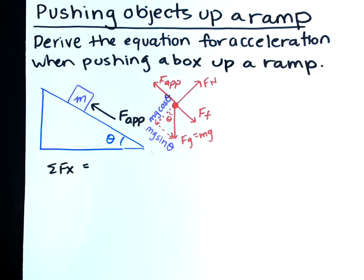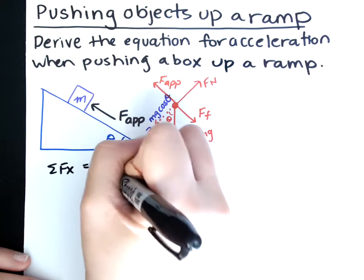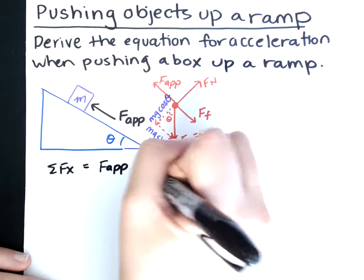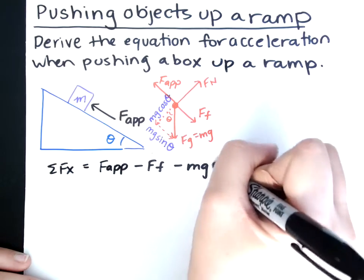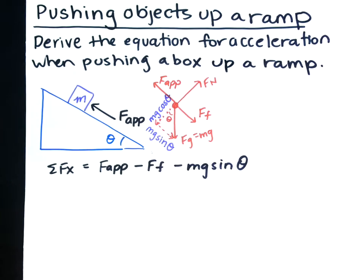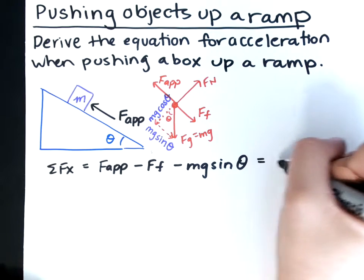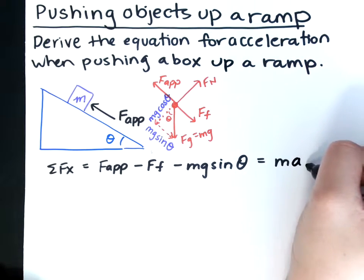Okay, we're going to call the direction it's moving positive. So f applied is positive. F of friction is negative. And mg sine theta is also negative. And this equals ma. And our acceleration is only in the x-direction, so I'll just label it as x.